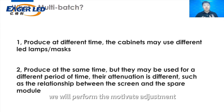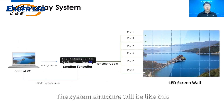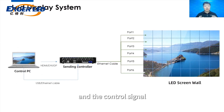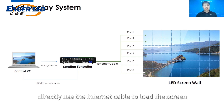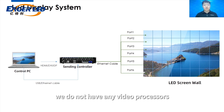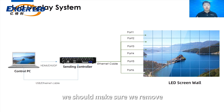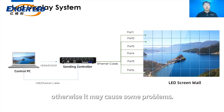So what about the system structure when we perform the multi-batch adjustment and connect our system? The control PC provides the video source and the control signal to the sending card, and the sending card directly uses the internet cable to load the screen. As you can see, we do not have any video processors. Which means before we start the multi-batch adjustment, we should make sure we remove all video processing devices, otherwise it may cause some problems.